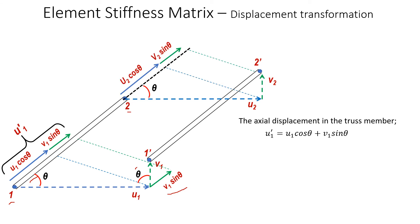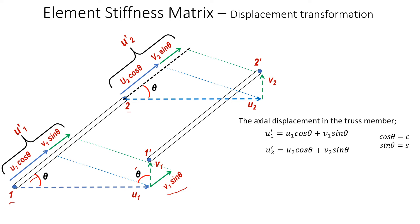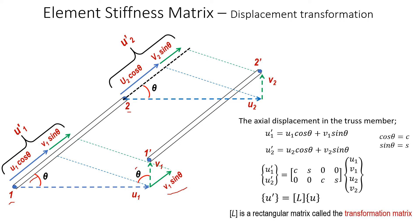The same applies at node 2. We can define the axial displacement for node 2 as U2 prime equals U2 cos theta plus V2 sin theta. To simplify the equations, let cos theta be denoted C and sin theta be denoted S. Transforming these two equations into matrix form, the axial displacement equals matrix L times U, where matrix L is a rectangular matrix called the transformation matrix.